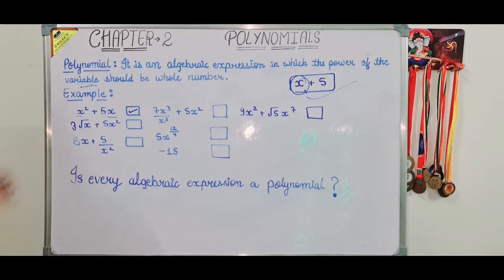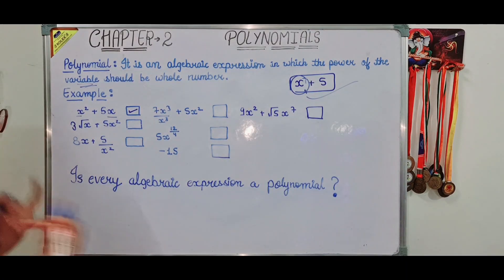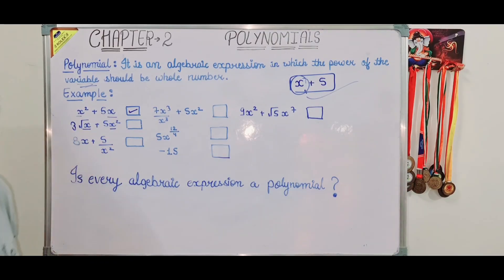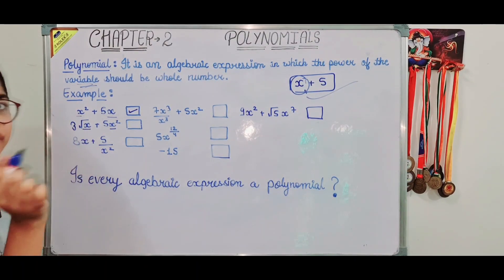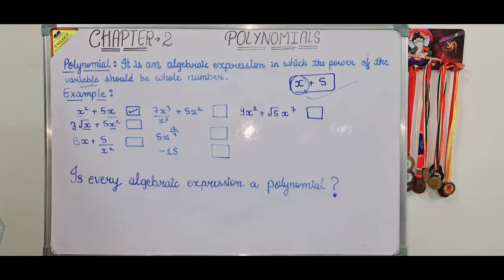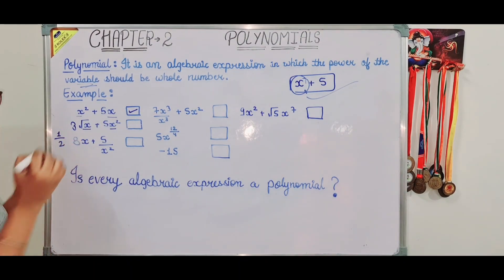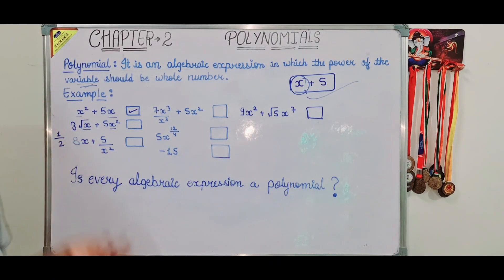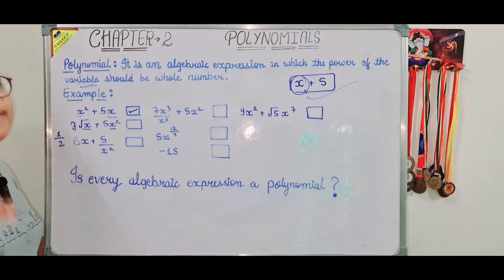Now the second example: root x plus 5x squared. Here we have a square root of x. The power of x in square root is 1 upon 2, which is a fraction — not a whole number. So the power of x here is not a whole number.